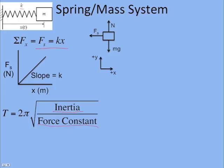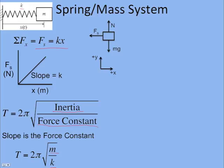And so for a system that's going in a straight line, we know inertia is the mass and the force constant is always going to be the slope of the force versus displacement graph. We'll find out also if it's a rotational system, it'd be the torque versus the angular displacement. And so the slope is the force constant, and so for a spring mass system we replace inertia with m and the force constant with k, and that's our period.